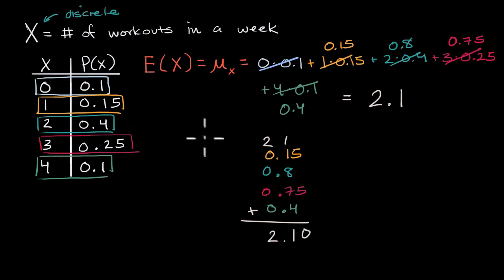So one way to think about it is, the expected value of X, the expected number of workouts for me in a week, given this probability distribution, is 2.1. Now you might be saying, wait, hold on a second. All of the outcomes here are whole numbers. How can you have 2.1 workouts in a week? What is 0.1 of a workout?